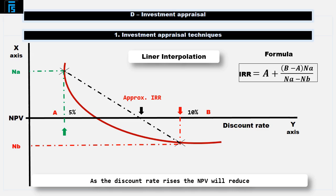You have to learn this formula for the exam — it's not given to you on the formula sheet. However, it may help you to remember it if you do the following: starting with the A and reading across, the formula spells out 'a banana NB'.